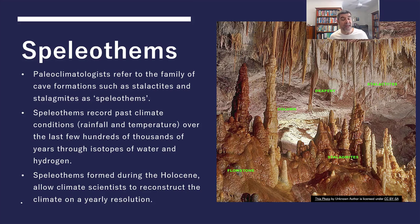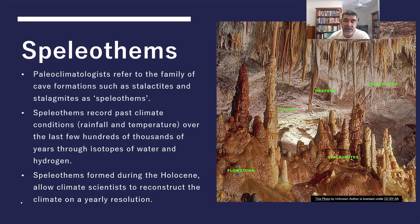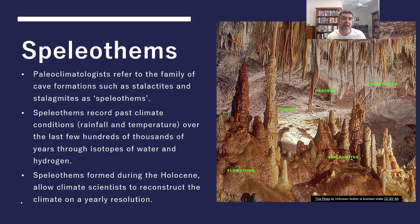Speleothems are another proxy for past climate conditions — another piece of evidence used when building our picture of climate change over time. They can produce hundreds to thousands of years of data through isotope research, revealing important information about carbon, oxygen, and possibly hydrogen isotopes that can indicate changes in past climate.